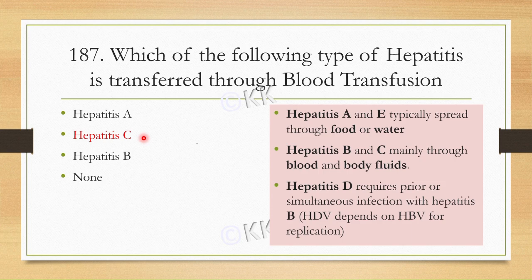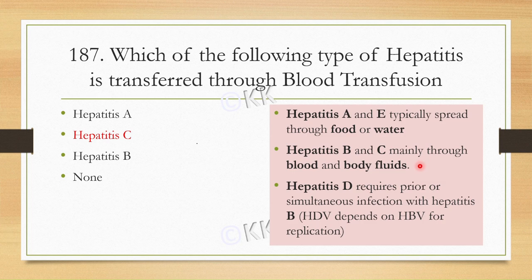We have seen questions regarding Hepatitis before. Hepatitis A and E are food and water-related diseases, transmitted through the fecal-oral route. Hepatitis B and C are mainly transmitted through blood and body fluids, such as blood transfusion or sexual contact. Hepatitis D occurs only after a prior Hepatitis B infection, because it is dependent on Hepatitis B for replication.